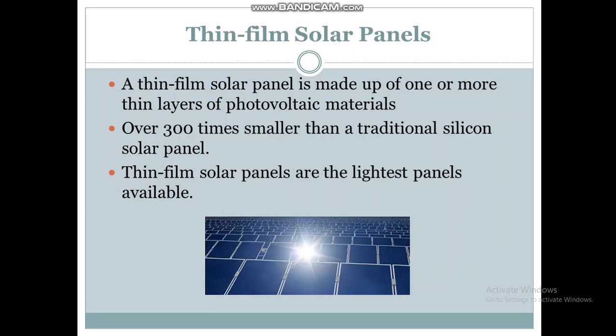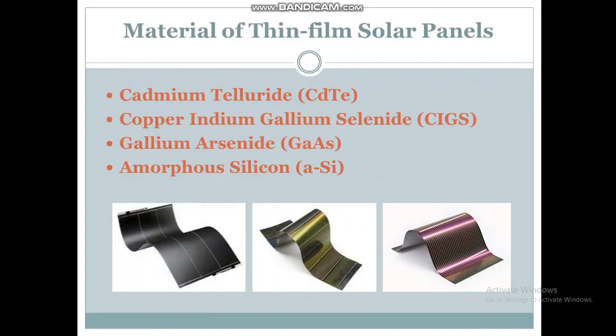Thin film solar panels. A thin film solar panel is made up of one or more thin layers of photovoltaic materials. It is over 300 times smaller than a traditional silicon solar panel. Thin film solar panels are the lightest panels available in the market. Materials used for deposition include cadmium telluride, copper indium gallium selenide, gallium arsenide, and amorphous silicon.